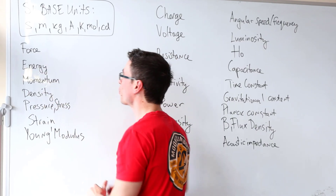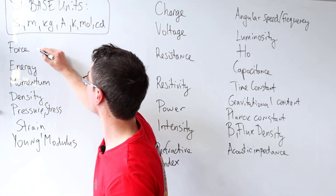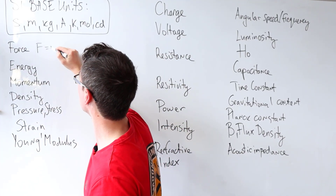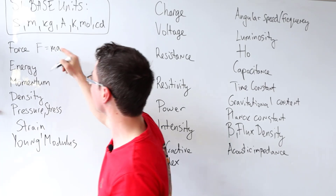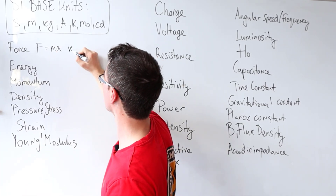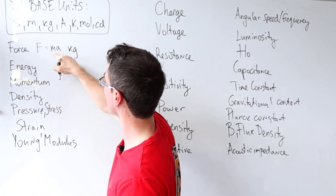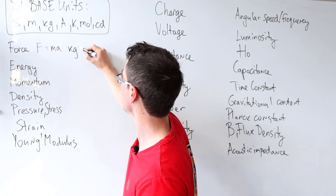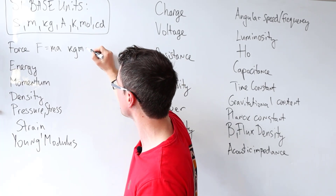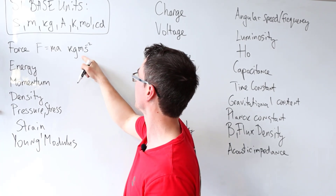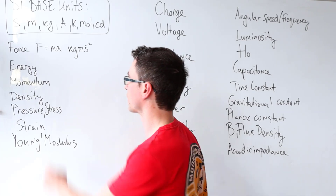Starting with force — remember force is equal to mass times acceleration. This means the base unit will be kilograms for the mass, times the acceleration which is meters per second squared.